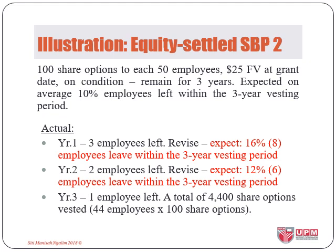In the second illustration, we have a similar scheme granted to 50 employees, but this time there is an expectation that some employees will leave during the three-year vesting period. At the end of year one, three employees left and 16% or eight employees are expected to leave within the three-year vesting period. In year two, two more employees left, totalling five. It was estimated that 12% or six employees in total will leave, meaning one more is expected to leave in year three.